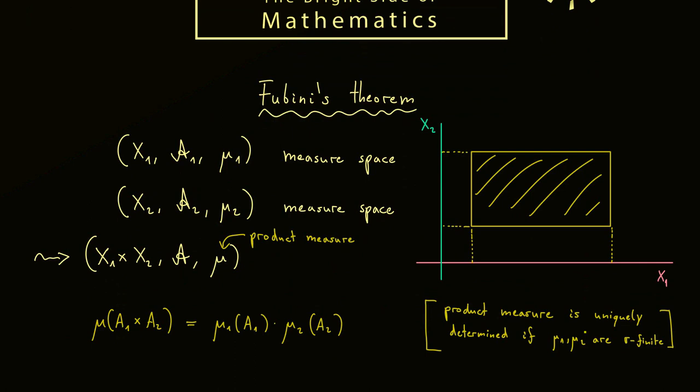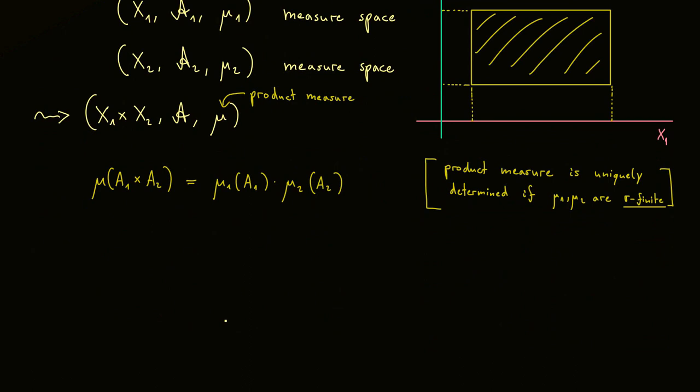And please also recall that there is exactly one measure with this rule if the two measures mu1 and mu2 are sigma finite. By knowing this, we can immediately formulate Fubini's theorem. Let's start with the assumptions. As promised, our measures should be sigma finite and the product measure is just denoted by mu.